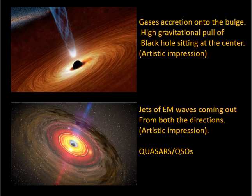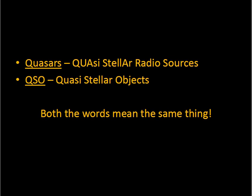In some cases, due to accretion events, the nucleus becomes active and begins to emit high energy electromagnetic radiations. These are called Quasars or QSOs. QSO stands for Quasi-stellar objects. Both of them mean the same.